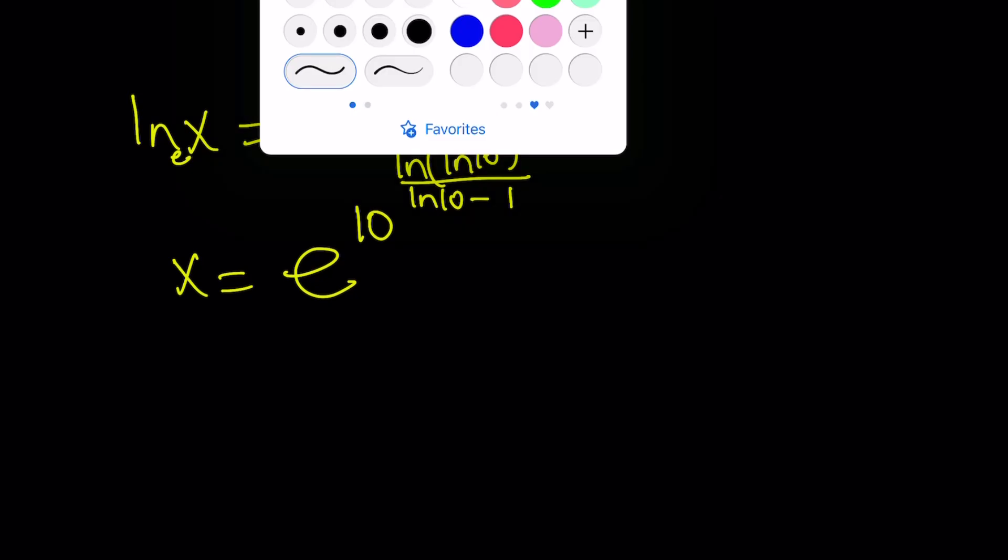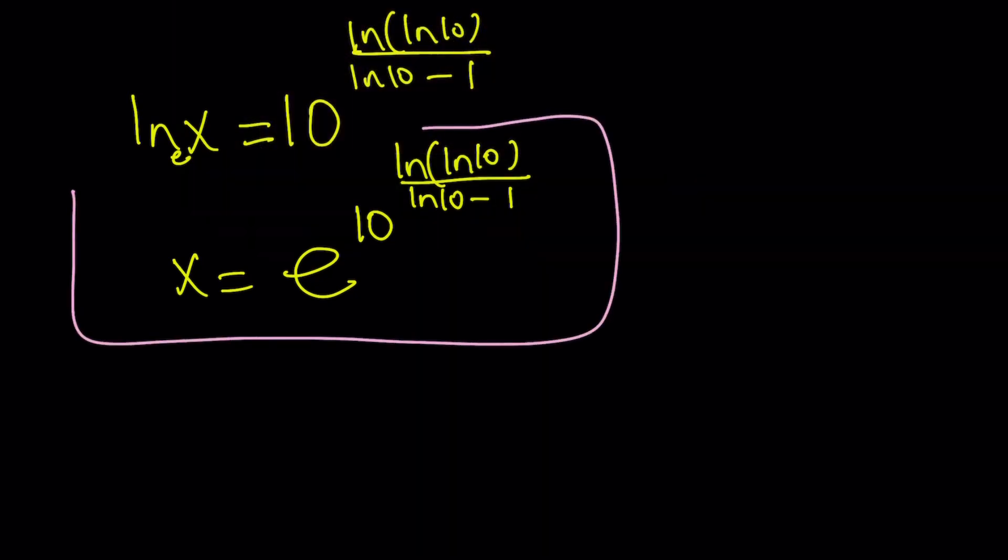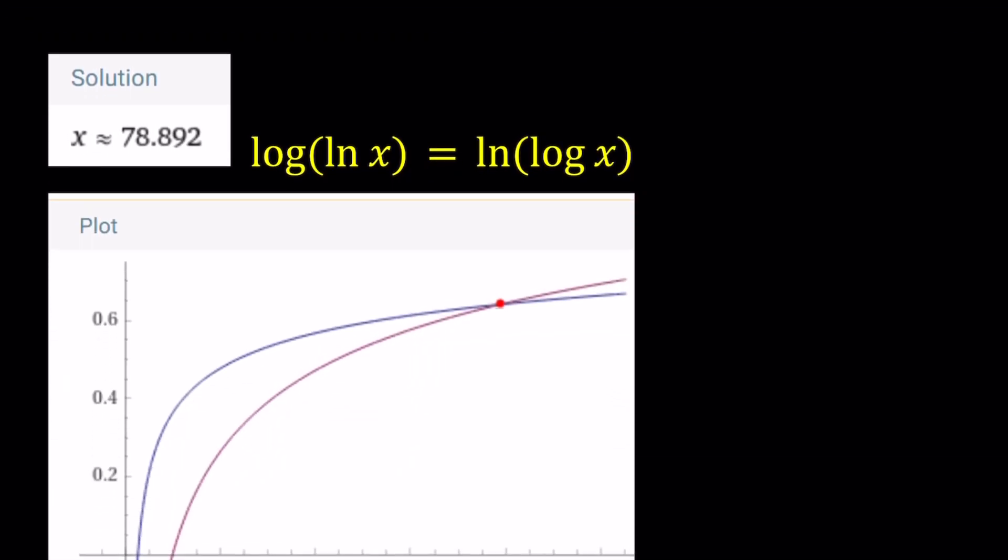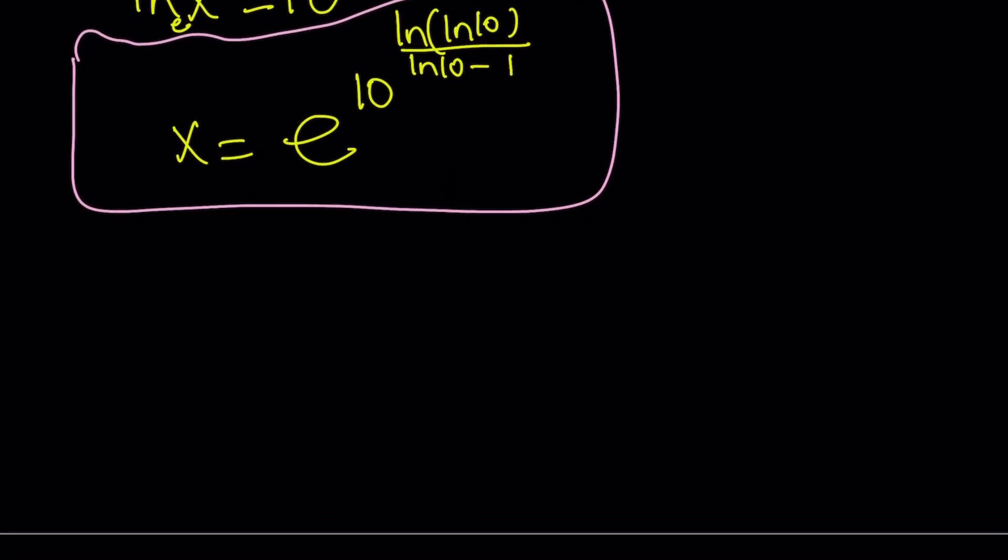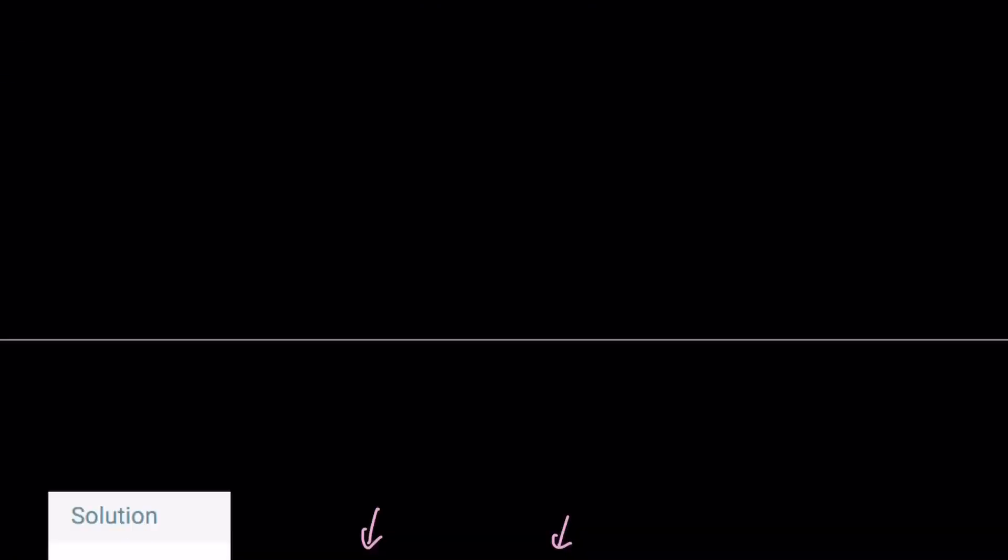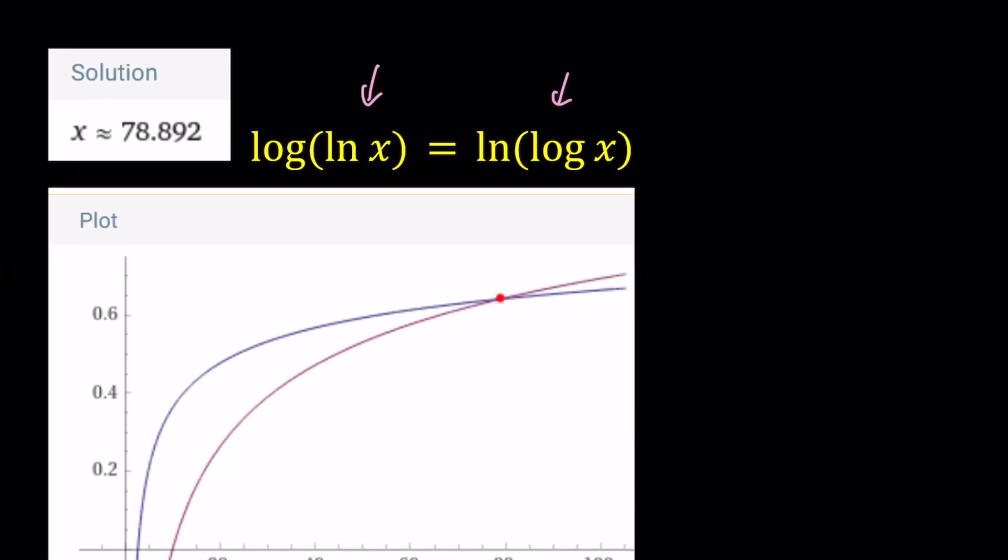Now, we're going to go ahead and take a look at the numerical value. And Wolfram Alpha actually gave us a really nice graph, which is not provided by Desmos. Because with Desmos, when I tried to graph this function, and by the way, I tried two different things. I graphed both of these functions, and then I graphed their difference. But it was really hard to see the intersection point on Desmos. That's why I used Wolfram Alpha for the graph. And it's really nice. You can see that our value, the solution to this equation, which was, you know, e to the power of 10 to the power of ln ln 10 divided by ln 10 minus 1 happens to be approximately 78.892. And here's the graph, and this brings us to the end of this video.